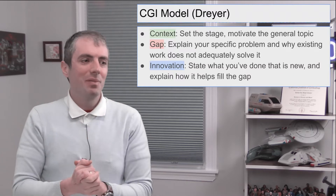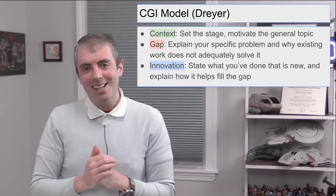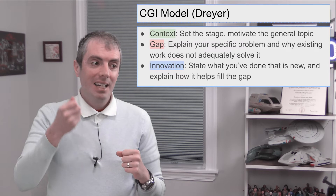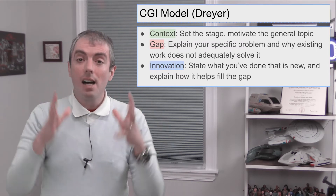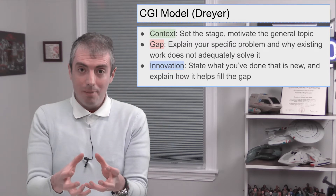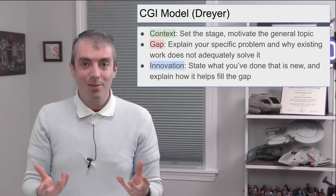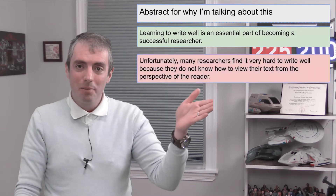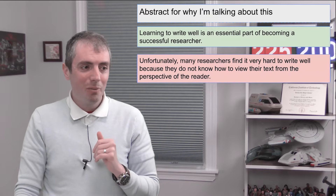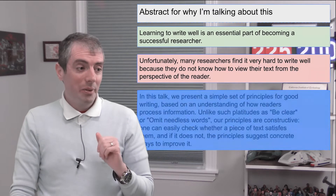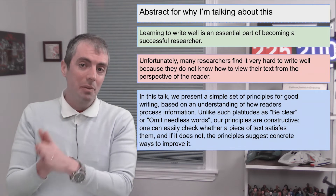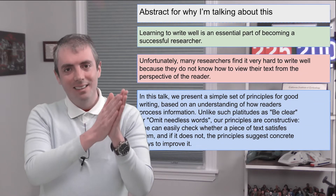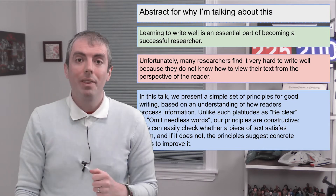Building on ideas from Derek Dreyer, he proposes the CGI model of writing an abstract. CGI stands for Context, Gap, and Innovation. First, what is the context — what are you writing about? For example, writing is important; despite that importance, it's hard to do well, and many people don't know how. The gap leads into the innovation, which is the part where you sell the paper. The context and gap are where you position your paper within your field.